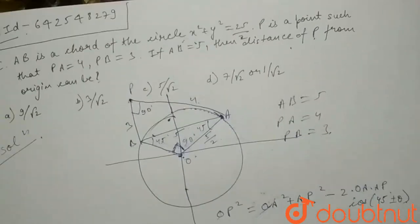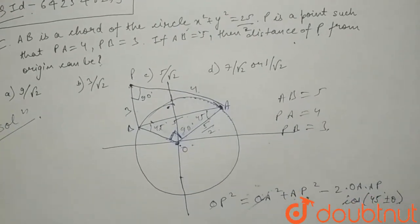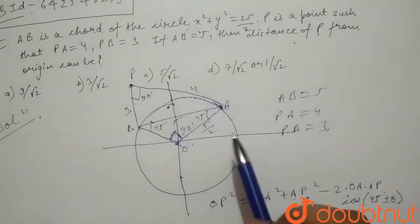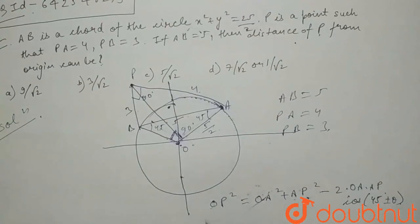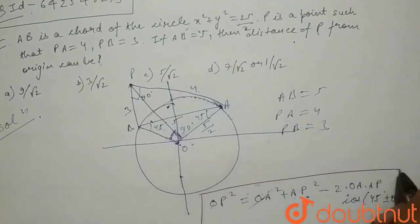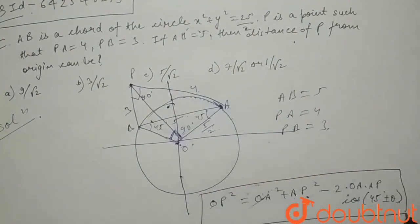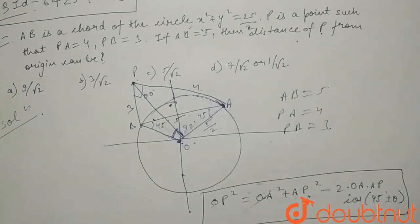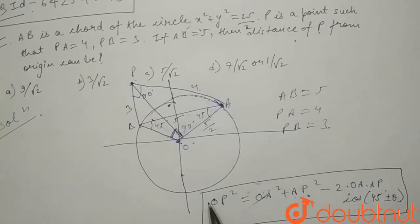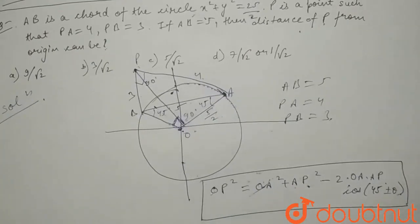This you have studied in vectors also, the formula. So we are using this formula here. This is a formula you can remember it also, where P is any external point and OA is the radius. So we are using this formula.